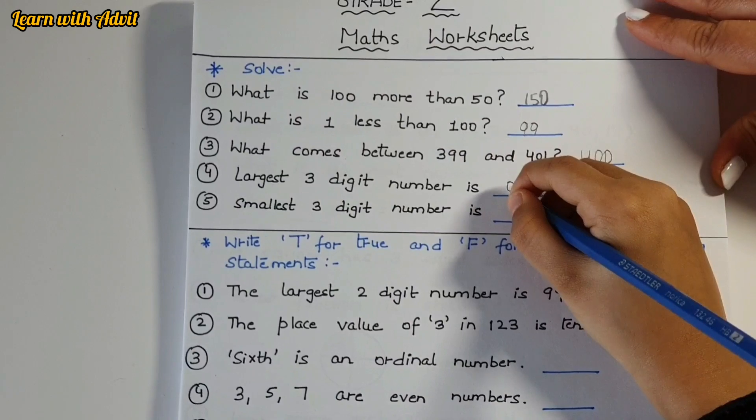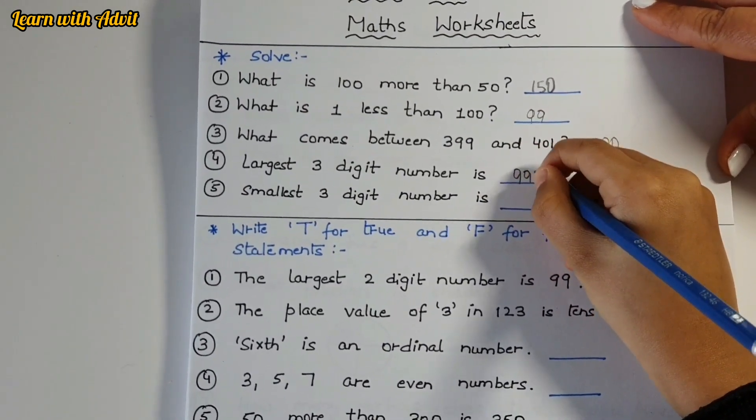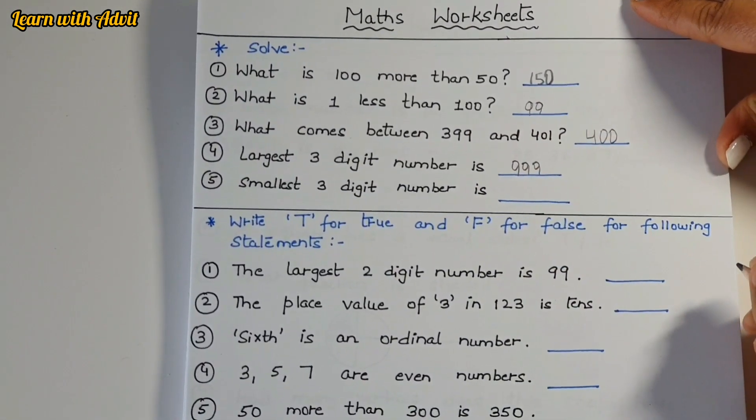Largest three digit number is 999. Smallest three digit number is 100. Very good.